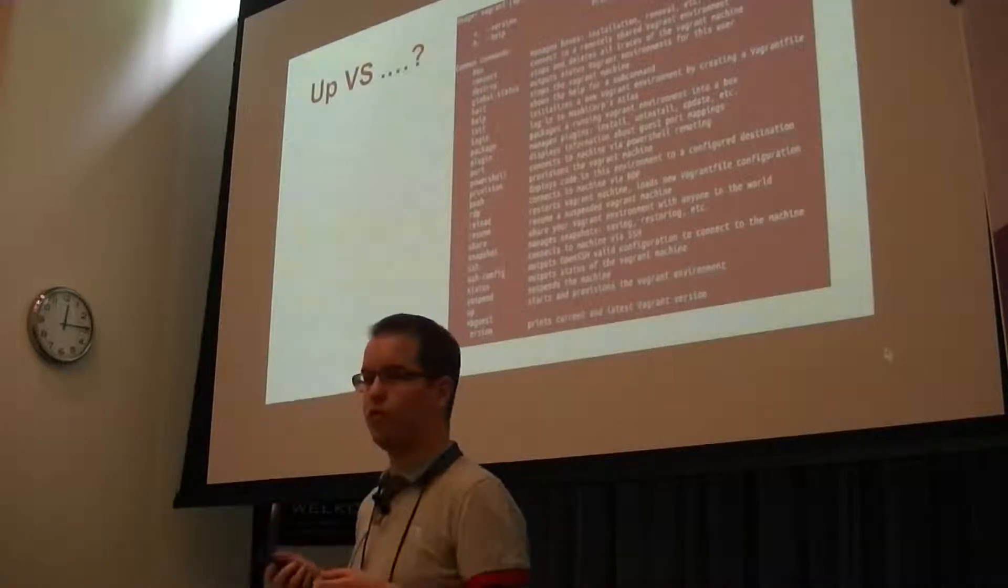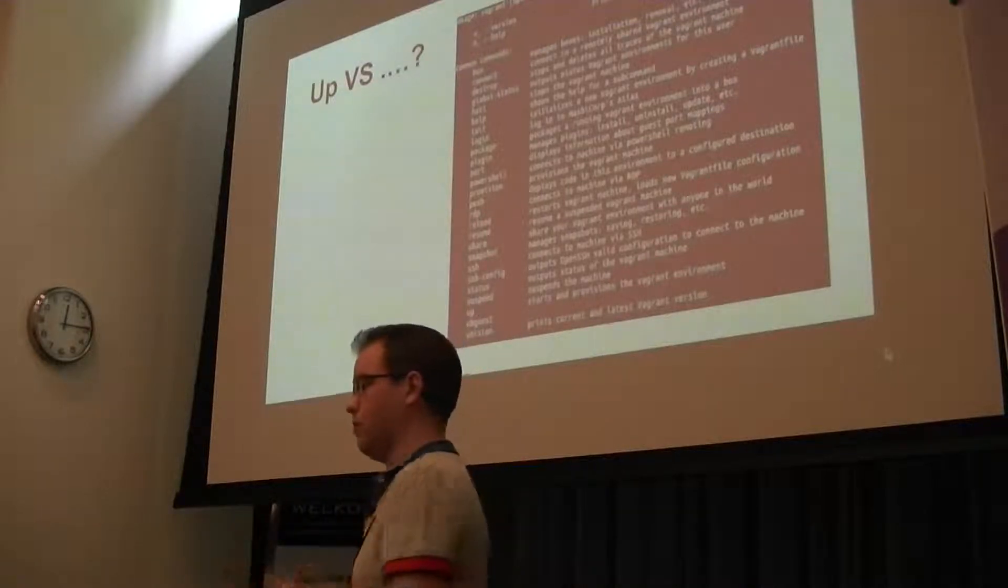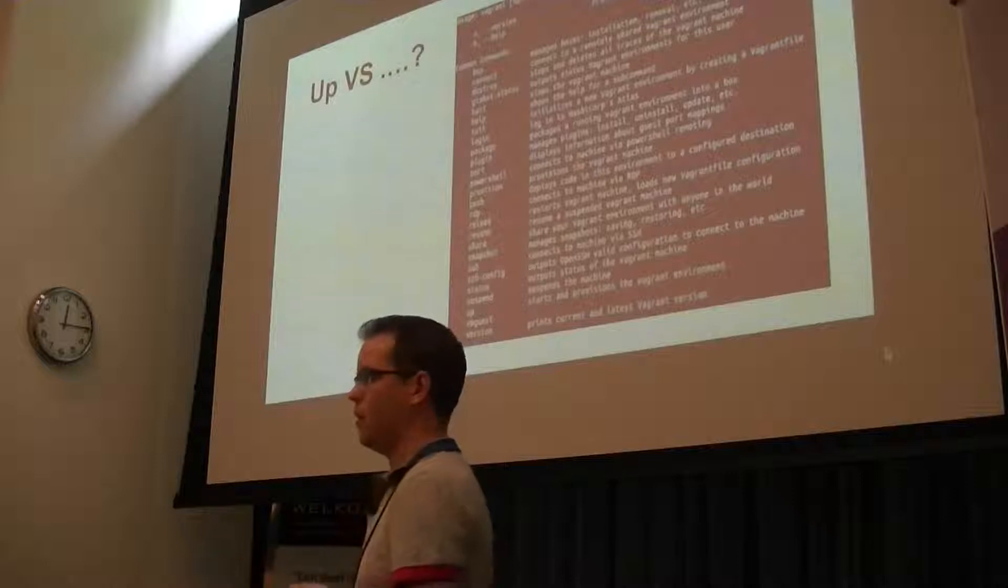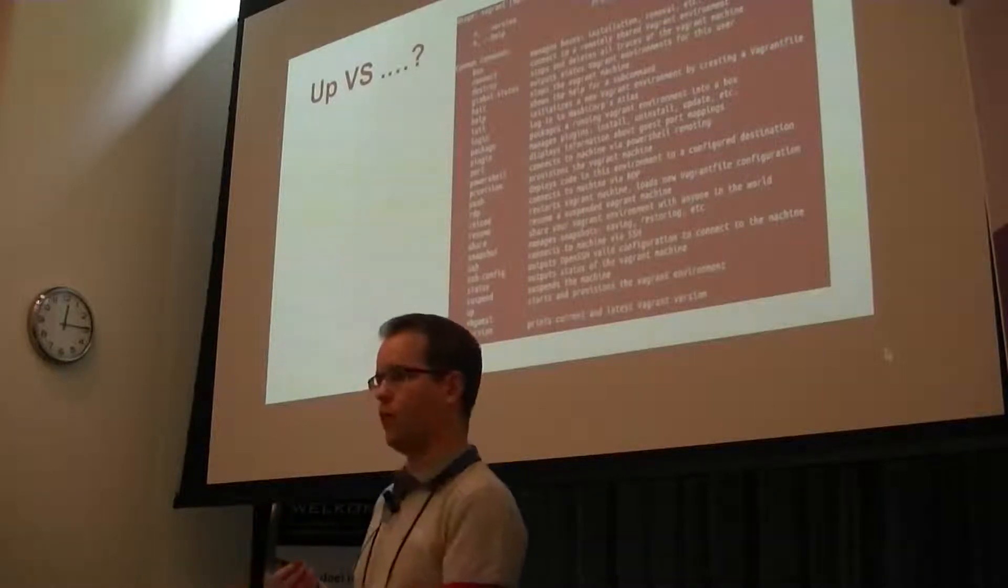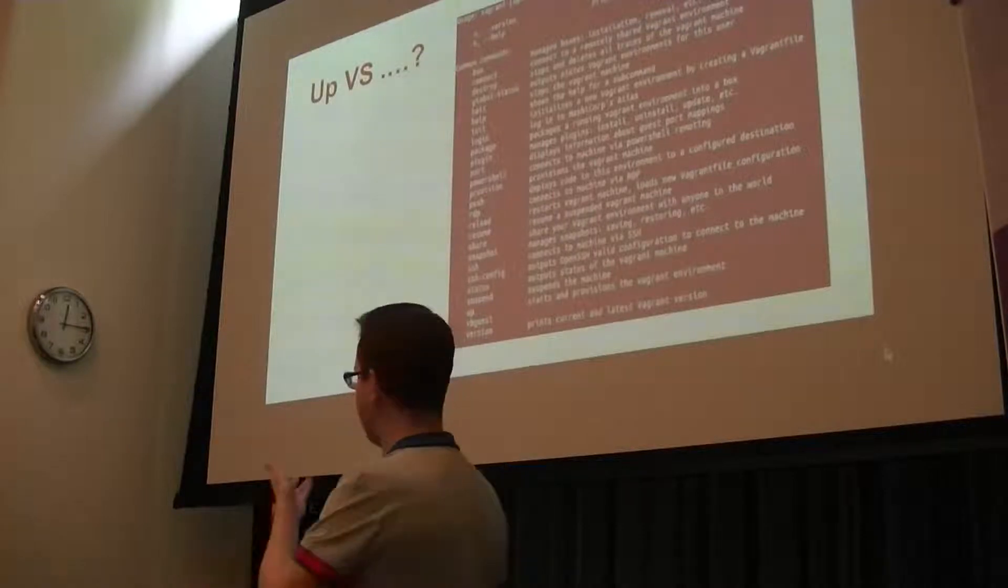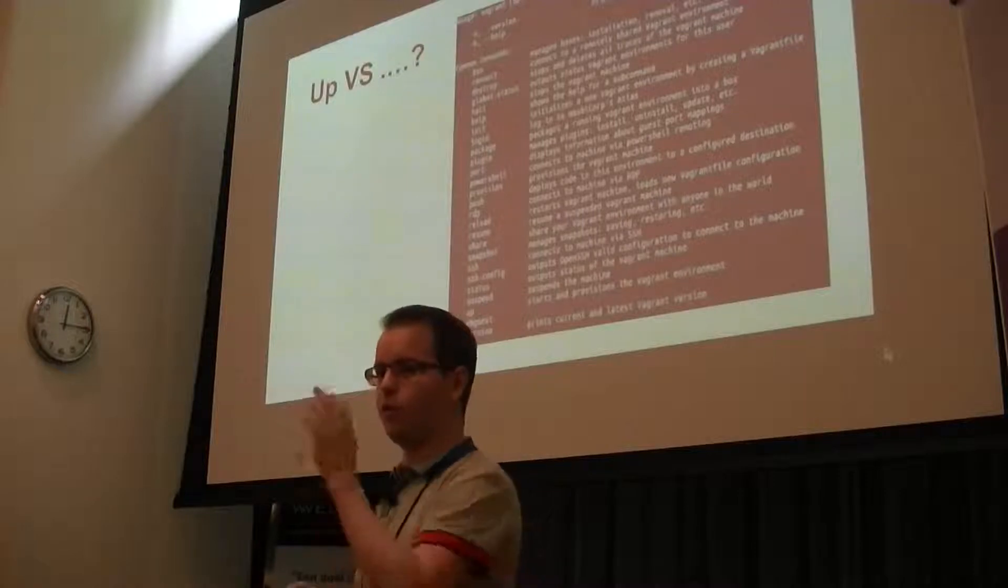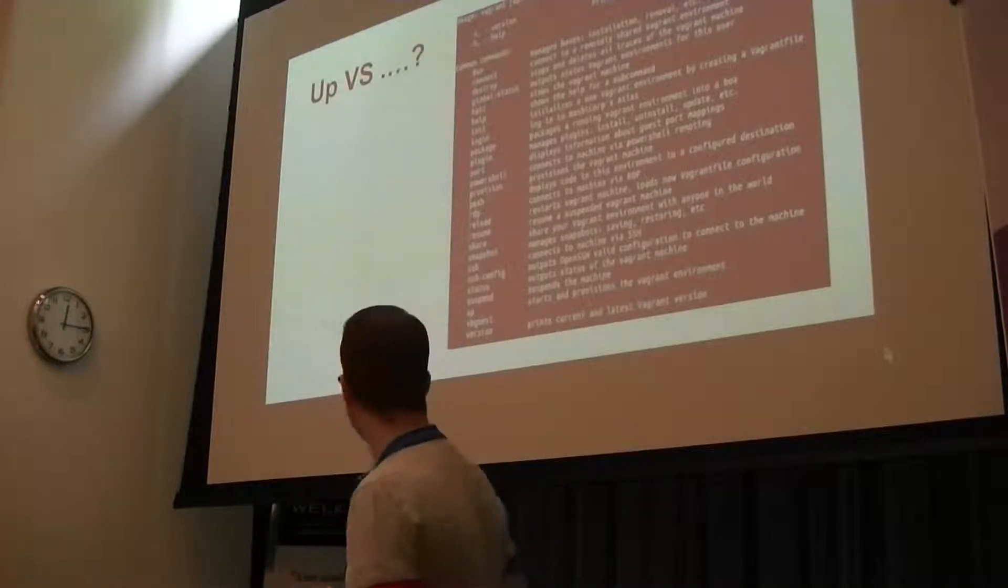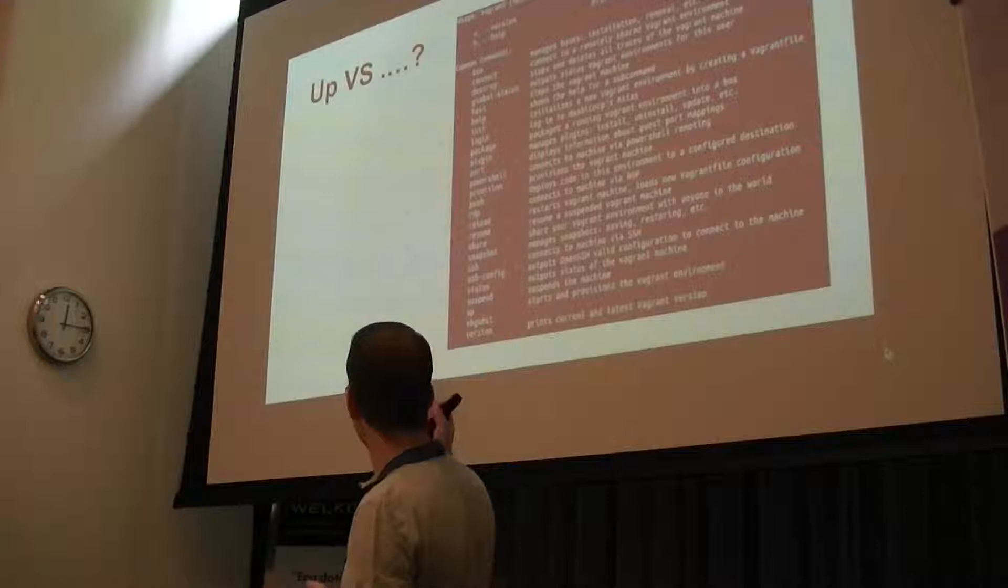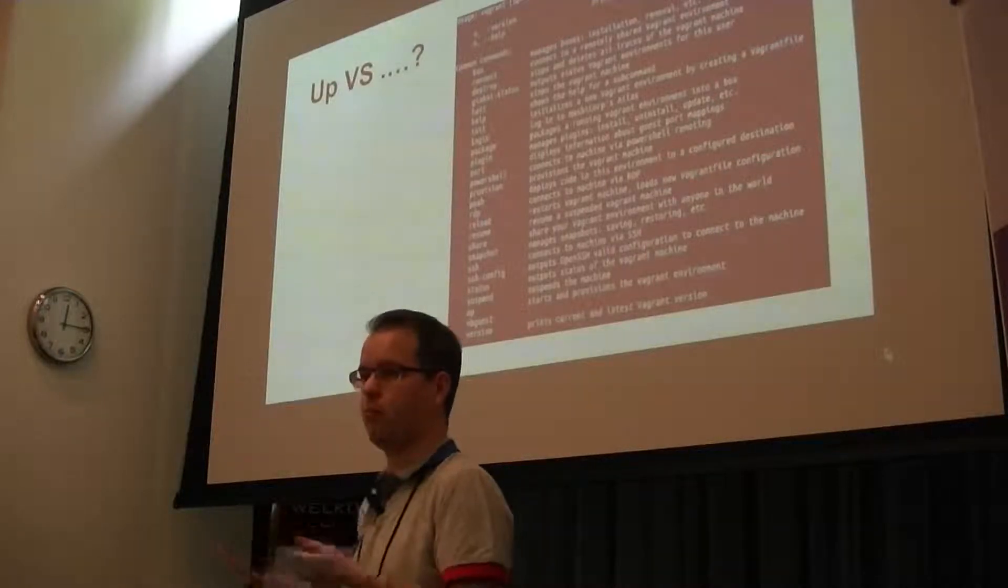The only thing I found confusing is when I start a machine, I give it an up to say start up the system. So I would expect if I would shut it down, then give it a down. But that's not the option they have. So they say you should use halt, or if you want to get rid of it, you should destroy it. But still, it's a good thing to see that more tools are being more features.